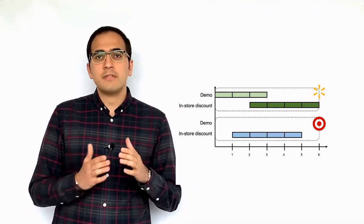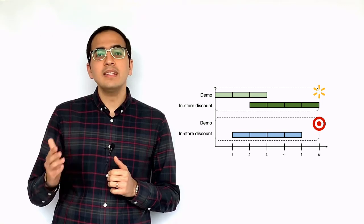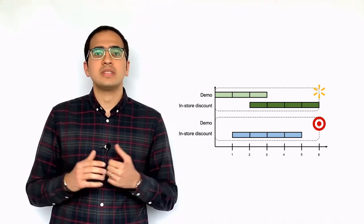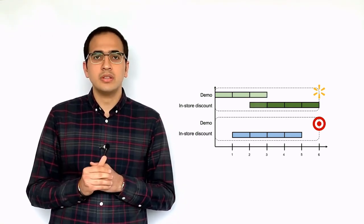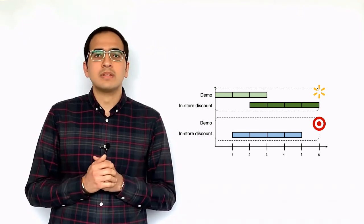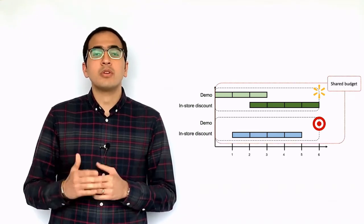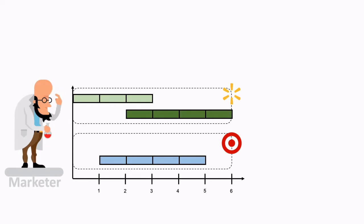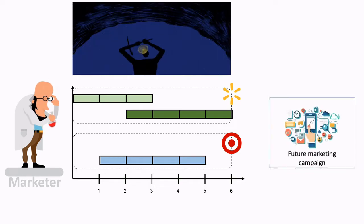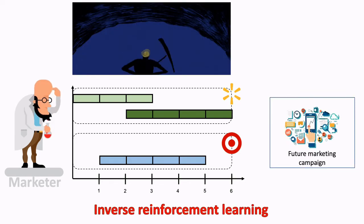Modeling the tactic planning problem as a sequential decision making process is important. Recalling the Walmart example, the demo in the first three weeks can affect the lift in the later weeks since demo and in-store discount can interact with each other and investing on one of them affects the budget for the other one. Since the marketers design marketing campaigns in a sequential manner, we make the mining and planning processes consistent via inverse reinforcement learning.